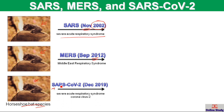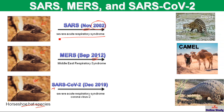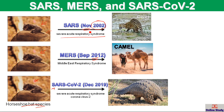This is called Severe Acute Respiratory Syndrome Coronavirus 2. In every case — SARS, MERS, and SARS-CoV-2 — the virus originated from the bat and then was transmitted to an intermediate animal before infecting humans. For the SARS virus it first infected the civet, the MERS virus first infected the camel, and SARS-CoV-2 first infected the pangolin.